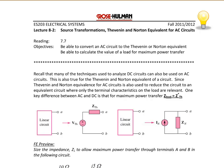Thevenin and Norton equivalents for AC circuits are used to reduce the circuit to an equivalent circuit with only one terminal characteristic — the load is what's most relevant. One key difference between AC and DC is that for maximum power transfer, Z_load is equal to Z_Thevenin conjugate.